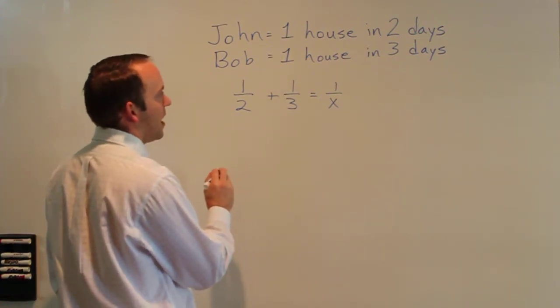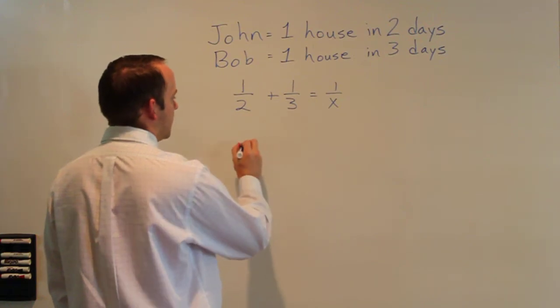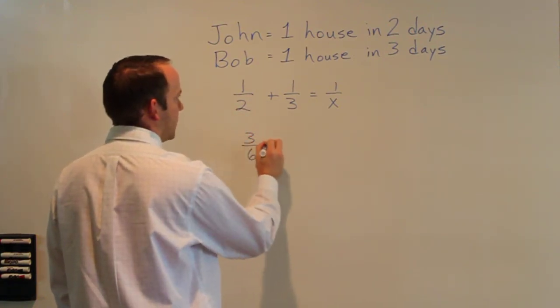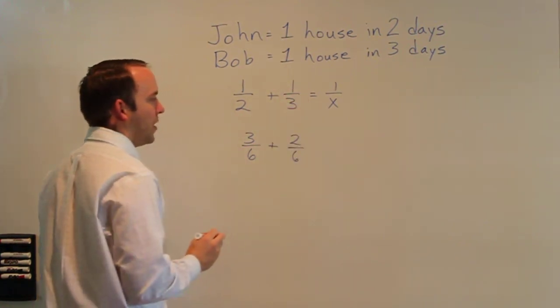First you want to find a common denominator. Two times three is six. One-half is the same as three-sixths plus two-sixths is the same as one-third.